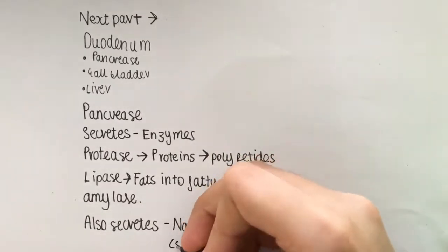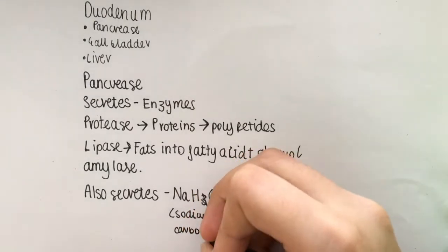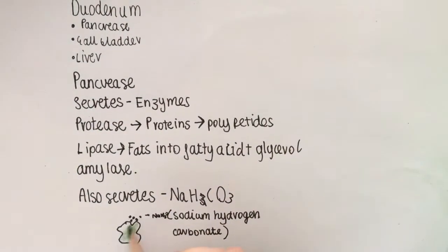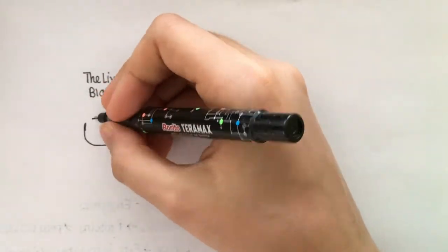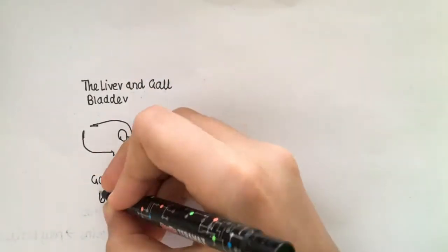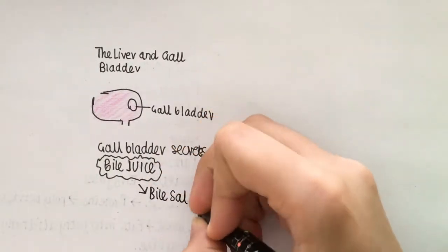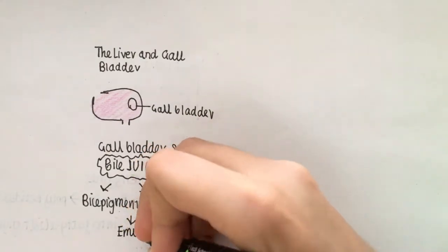The gallbladder secretes bile juice, which is stored in the liver. The bile juice contains bile salts and bile pigments, which both emulsify fats.